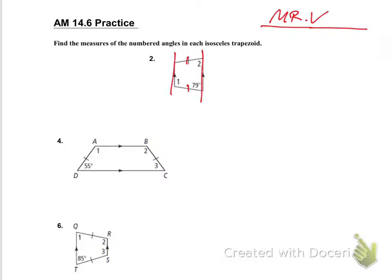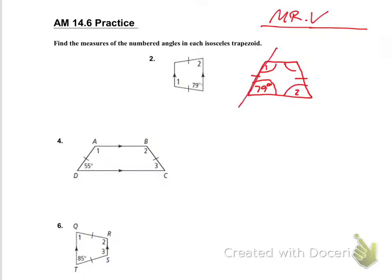This one looks like it's kind of on its side, so if you needed to rewrite this, you could do it like where this side is equal to this side. That would mean that this is angle one, this is angle two, and this is an angle of 79 degrees. The upper angles are congruent — this angle and this angle — and this side is parallel to that side, not equal.